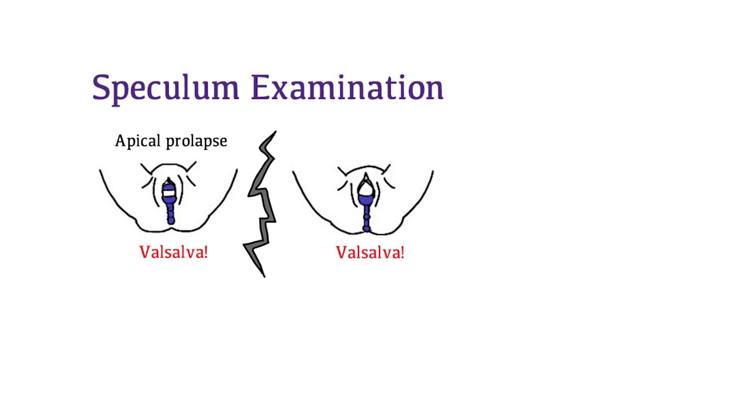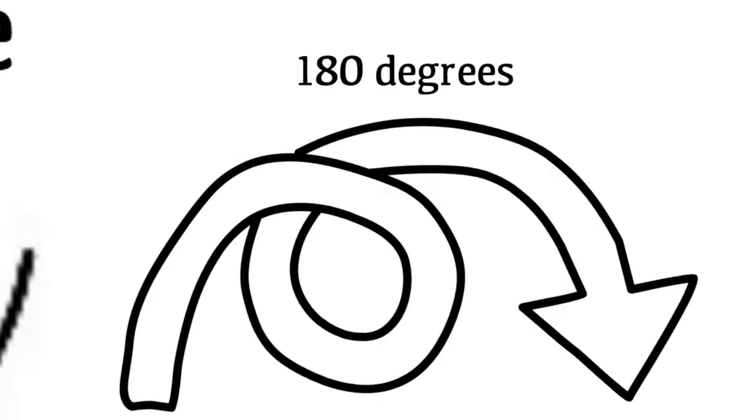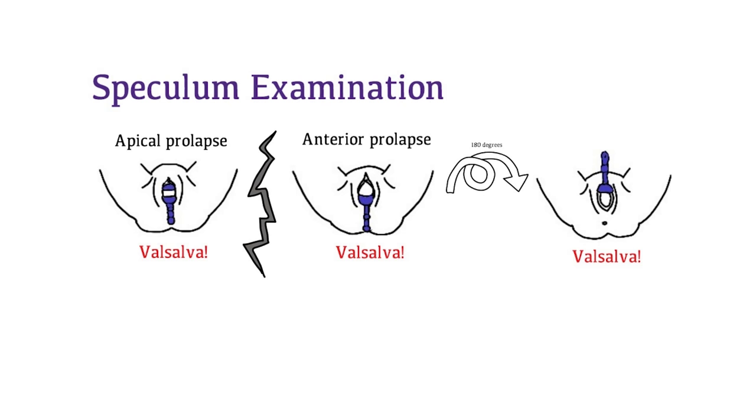Now, rotate the speculum 180 degrees and displace the anterior vaginal wall to visualize the posterior vaginal wall for rectocele and enterocele.